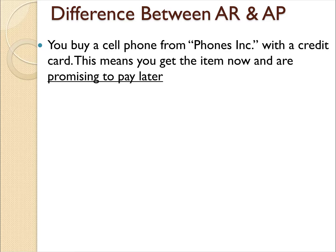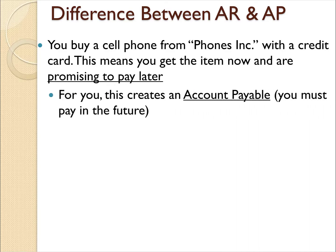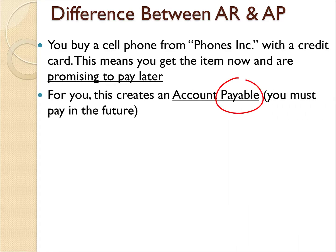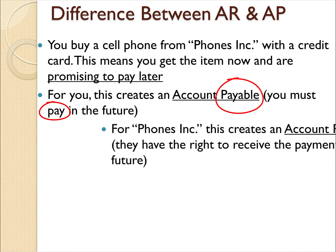Because you have to pay, this creates an accounts payable for you, because you must pay it in the future. So what would the company selling the phone record? This creates an accounts receivable for the company selling the phone, because they have the right to receive the payment in the future.